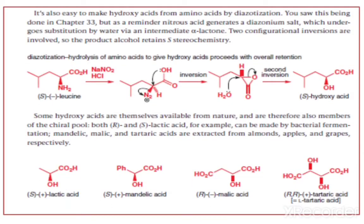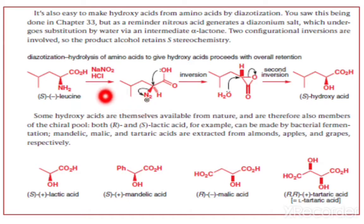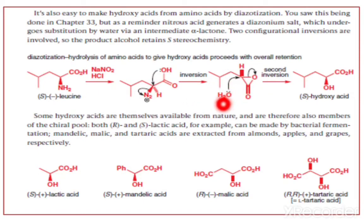It is also easy to make hydroxy acids from amino acids by the diazotization reaction. The best example: conversion of S-leucine to S-hydroxy acid. S-leucine on treatment with NaNO2 in presence of HCl — the NH2 group is converted into N2+. The first step is a diazotization reaction. In the next step, there is inversion — that means an SN2 reaction — where the hydroxyl group attacks opposite to the good leaving group, giving one intermediate: the alpha-lactone.